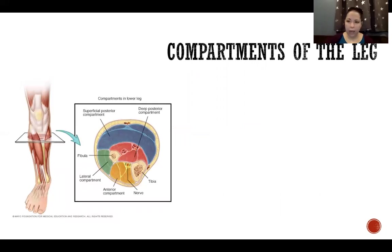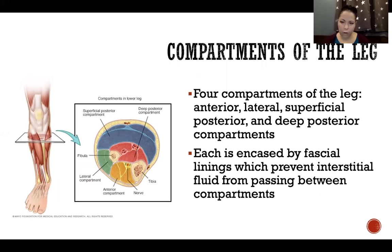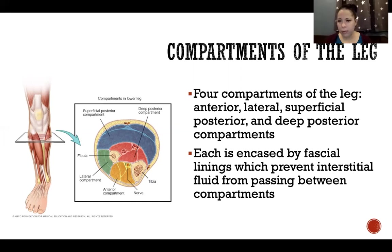Compartments of the leg: the leg, between the knee and the ankle, is divided into compartments by fascial linings. We have four compartments: anterior, lateral, and two posterior compartments — superficial posterior and deep posterior. Each is encased by fascial linings which prevent interstitial fluid from passing between compartments. This is true in many places in the body, but I bring it up here specifically because it will be important when we talk about compartment syndrome as an injury and dysfunction in the leg.